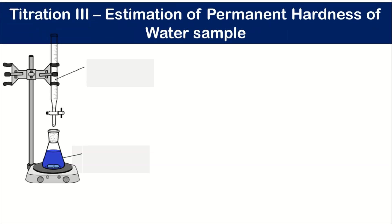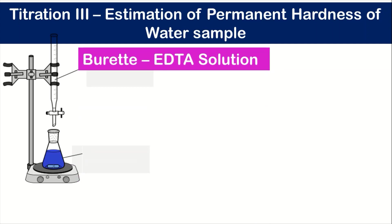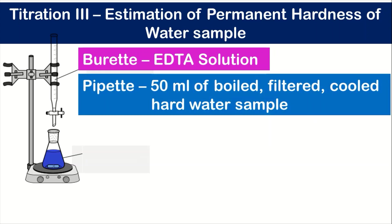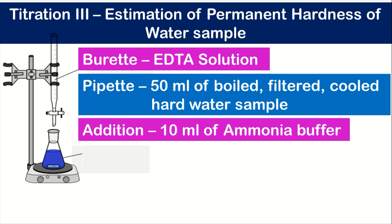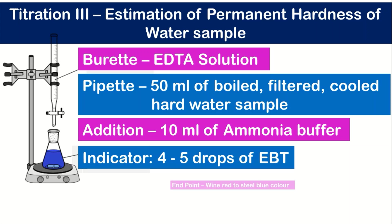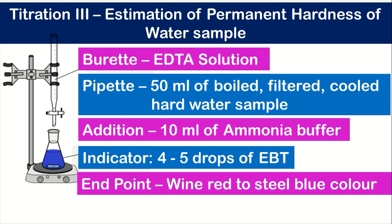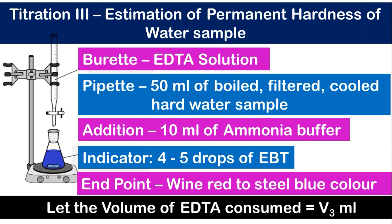Titration three is carried out with boiled, cooled, and filtered water sample, because temporary hardness-producing salts are removed during boiling. After boiling, cooling, and filtering we have removed the temporary hardness, so we are estimating the permanent hardness. We take EDTA in the burette and 50 ml of the boiled, filtered, cooled hard water sample in the pipette, add 10 ml of ammonia buffer and four to five drops of EBT indicator. The endpoint is wine red to steel blue, and the volume of EDTA consumed is V3 ml.